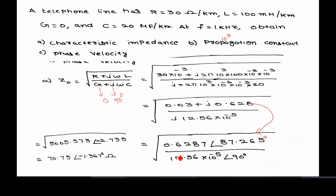To find Z₀, divide the two numbers: subtract the angles — 87.265 minus 90 degrees gives approximately negative 2.735 degrees. While taking the square root, divide the angle by 2, giving about negative 1.37 degrees. For the magnitude part, take the square root of the ratio.